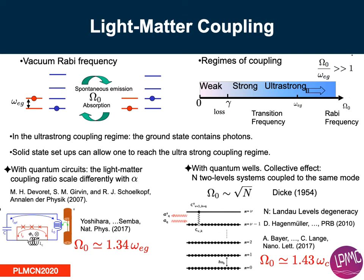It deals with cavity quantum electrodynamics, which studies the light-matter coupling at the quantum level. You have different kinds of light-matter coupling regimes depending on how strong the vacuum Rabi frequency is — a constant which quantifies the light-matter coupling. You can enter into the ultra-strong coupling regime for very large coupling constants, and then you have qualitatively new features.